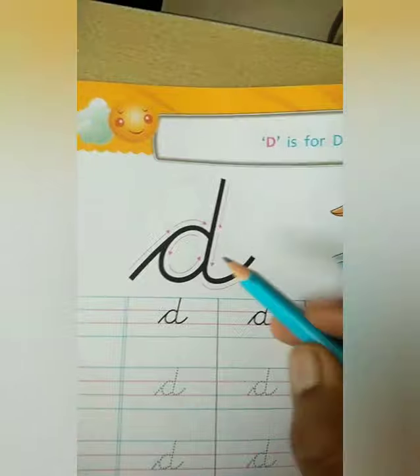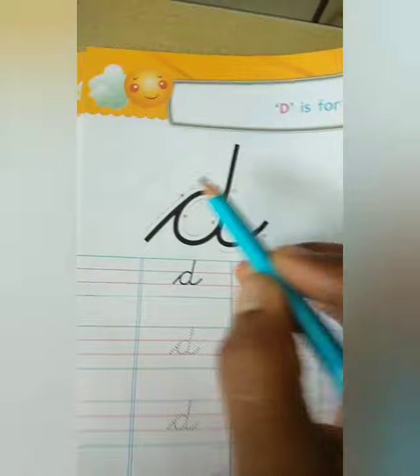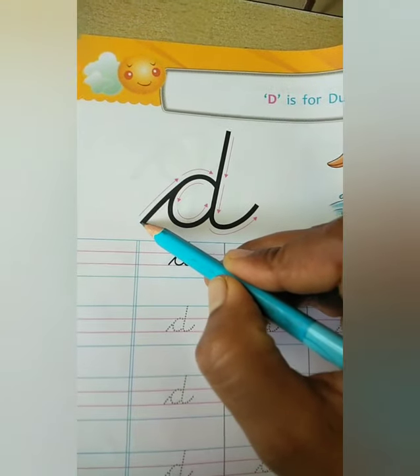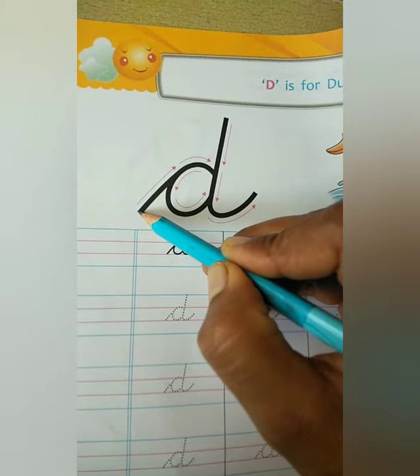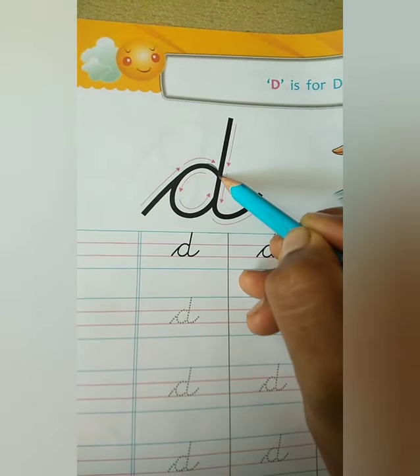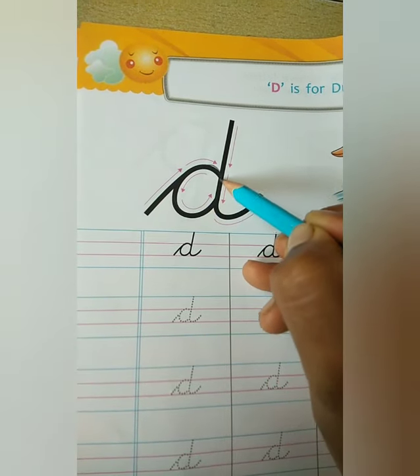Small cursive D. This G and D both are the same curve. It is a little different. This is Z. Start from here. Go, then down side, go, then up, then same line.